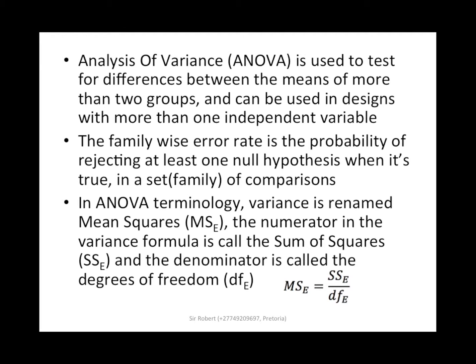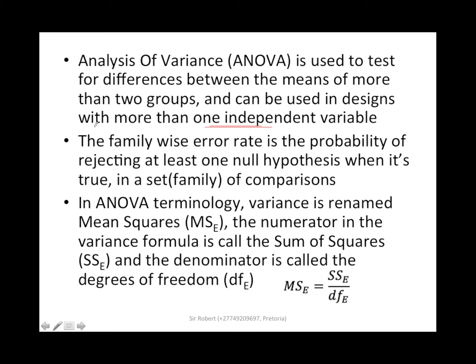ANOVA, which means analysis of variance, is used to test for differences between the means of more than two groups, and can be used in designs with more than one independent variable. However, for this syllabus of OP2601, we only work with one independent variable. The family-wise error rate is the probability of rejecting at least one null hypothesis when it is true in a set of family comparisons.